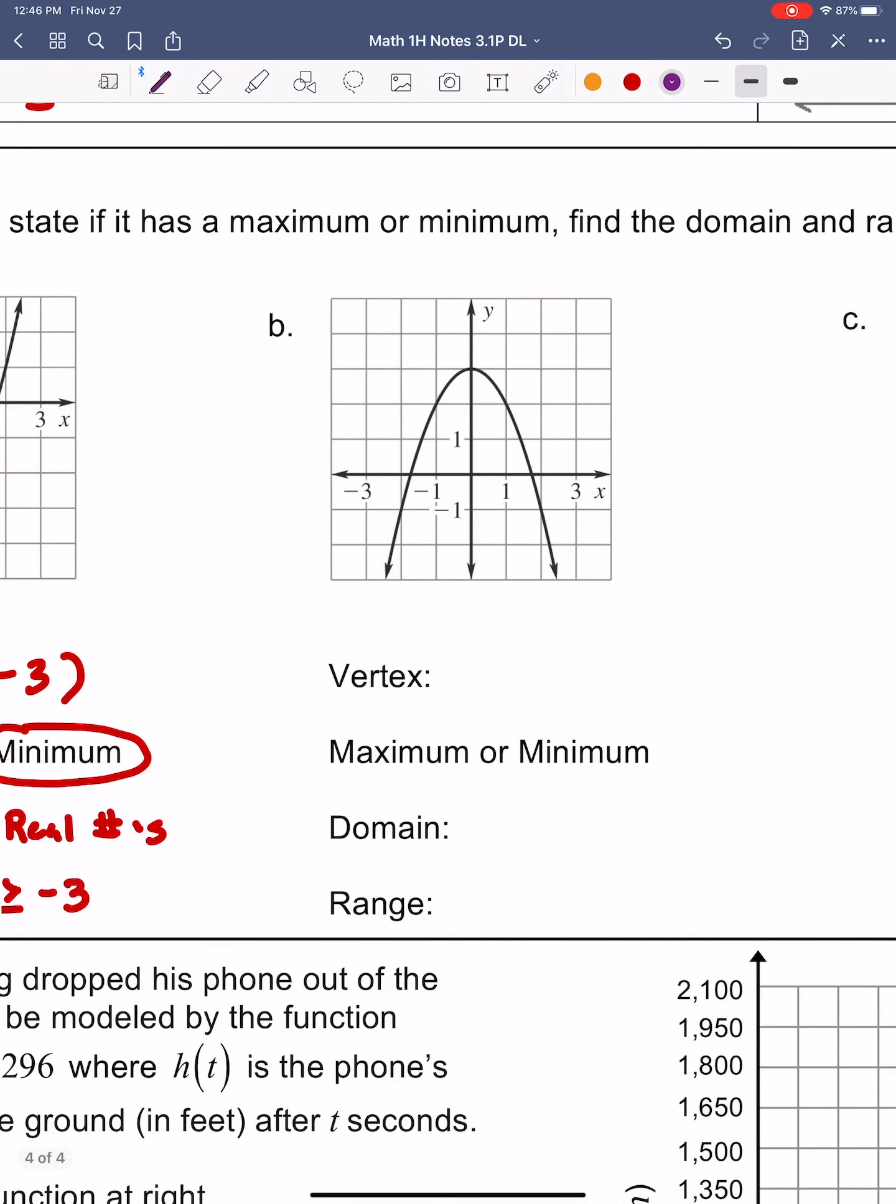Moving over to letter B here. Vertex this time is up here at positive 3, at the top of my graph, which makes it a maximum. The domain is all real numbers. They might write that as a compound inequality: x from negative infinity to positive infinity, which means it's all the numbers. In this case, we're going down. So I'm going to say y is less than or equal to positive 3 because it's going down from positive 3—that's the top.